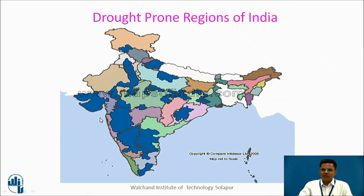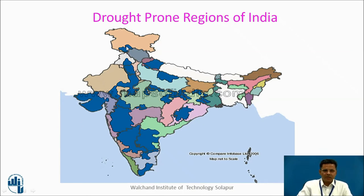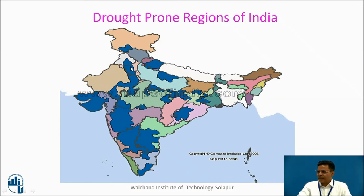Based on the rainfall pattern, one can identify the drought-prone regions of India. Gujarat, some portions of Maharashtra, Karnataka, Tamil Nadu, and some portions of Rajasthan are the frequently drought-prone regions of India.